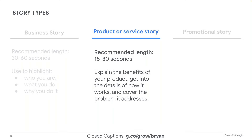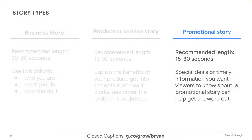The next story type is a product or service story. Product or service stories can help move potential customers from being aware of your business to being interested in making a purchase — like, now that we know each other, let me show you a couple things that might be of interest. Last but not least, the promotional story. This story type is great for announcing special deals or timely information. Recommended length for promotional and product stories is 15 to 30 seconds. A promotional story video works best after customers are already aware of your brand and know how your product works, and you want to get them over the fence to actually convert into a customer.